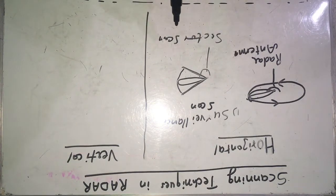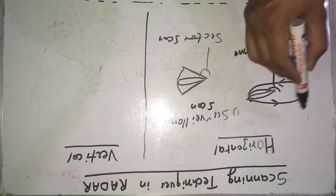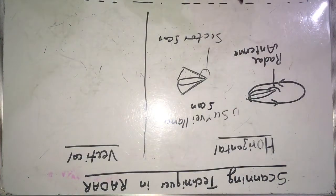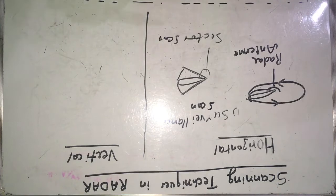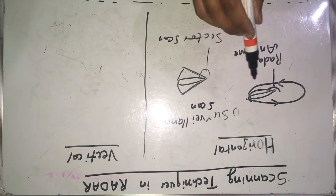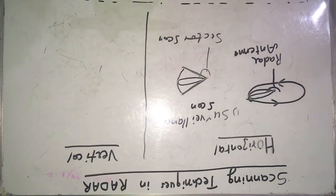The disadvantage of horizontal scanning is that it can scan along the horizontal plane only. Its application is in ship-to-ship radar — for example, a ship installed with a radar wants to scan the nearby area to detect the presence of another ship. There, scanning in the horizontal plane only is required, so horizontal scanning is used.